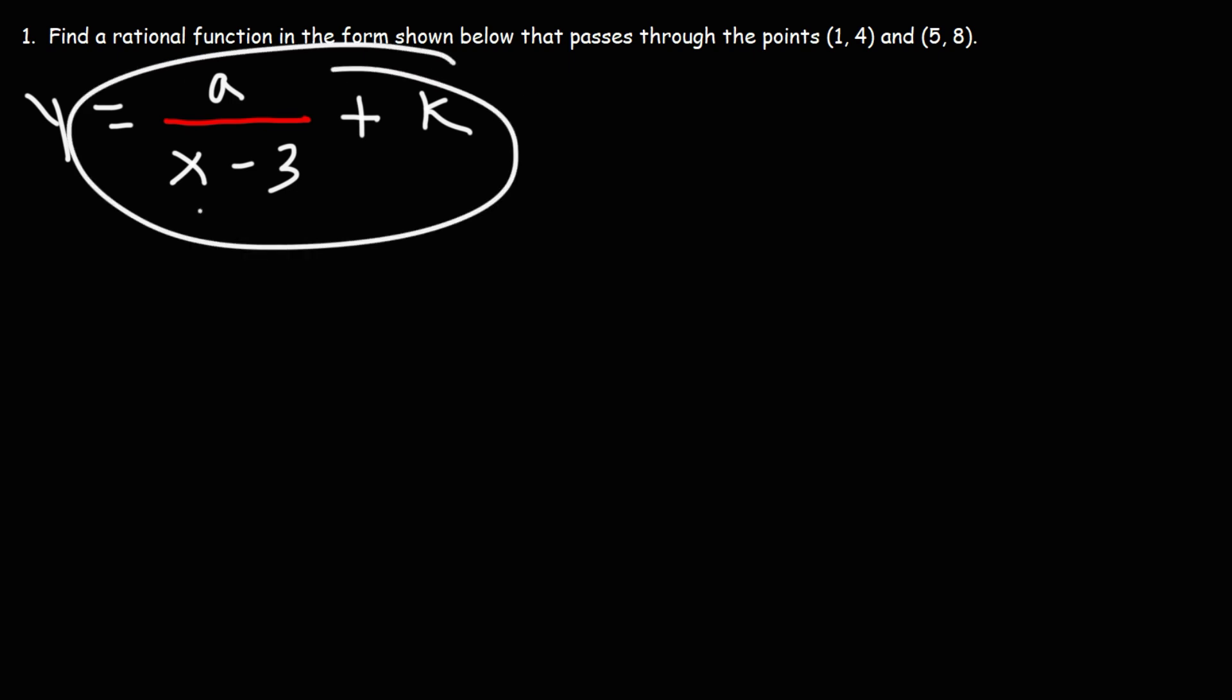This particular rational function is also known as a reciprocal function, the parent function being 1 over x. Now this function has gone through some transformations. It's in the form a over x minus h plus k.